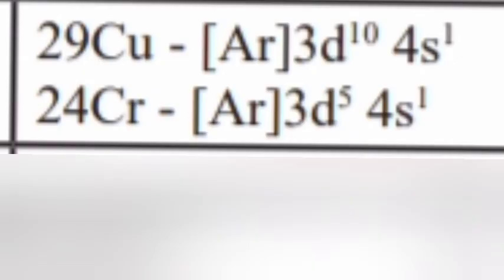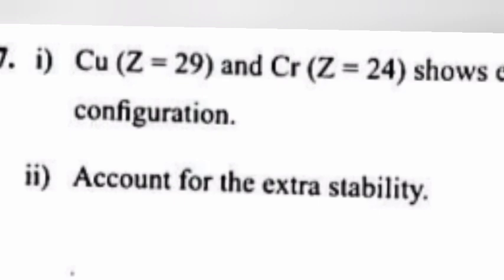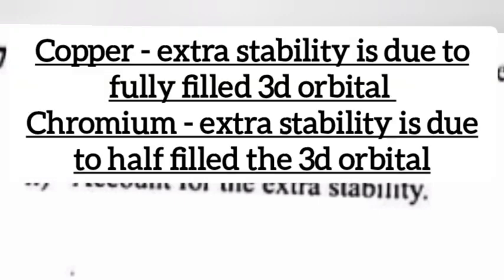Question 7, part 1: Cu and Cr show extra stability. Write their subshell electronic configuration. Answer: Cu = [Ar] 3d10 4s1, Cr = [Ar] 3d5 4s1. Part 2: Account for the extra stability. Answer: Copper's extra stability is due to fully filled 3d orbital. Chromium's extra stability is due to half filled 3d orbital.